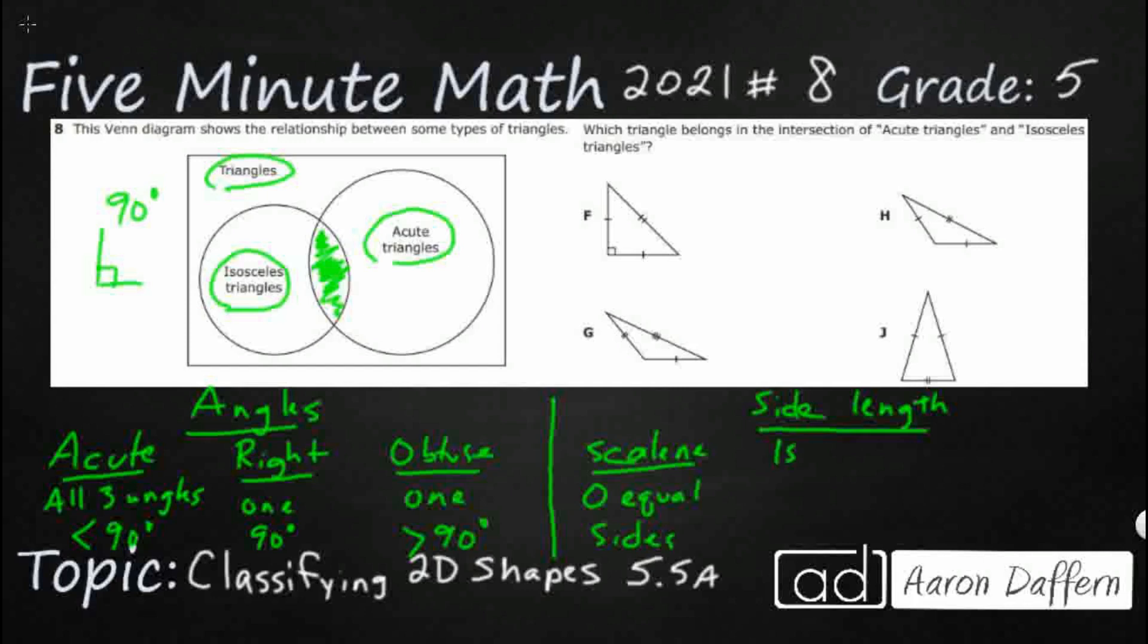Then we have an isosceles. Isosceles is definitely a strange name, but think of these letters S-O-S, same, other, same, right? Or E-L-E, equal, long, equal. So you have two equal sides.